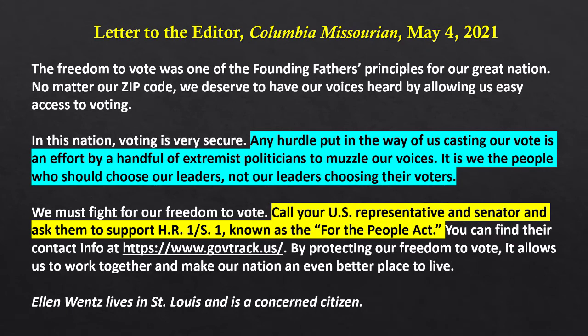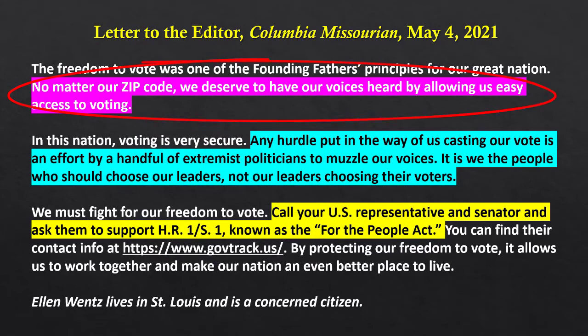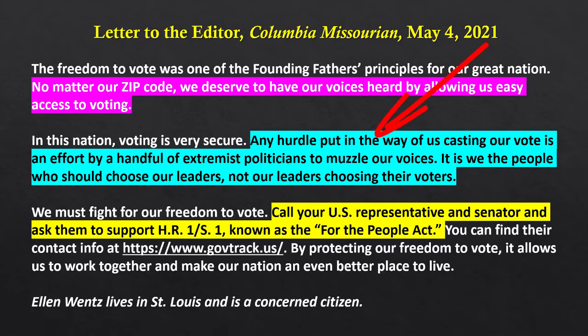But we still need to figure out how we get from those particular premises in the evidence to the policy claim that this For the People Act needs to be supported. So where are the pieces of reasoning? This gets us to another potential complication — although it can be a productive complication — in figuring out how these arguments work. There are a number of different premises in this argument that could potentially work as warrants or as reasoning links between the evidence and the claim. One of them, for instance, is: no matter our zip code, we deserve to have our voices heard by allowing us easy access to voting.